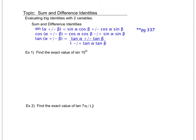Basically what I've shown is I've written this as if I have sine of alpha plus beta, so I have two separate variables. I cannot distribute. Number one mistake I see, so I'm going to say it again: I cannot distribute a trig function.